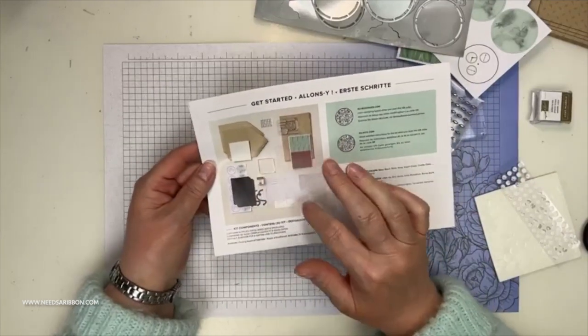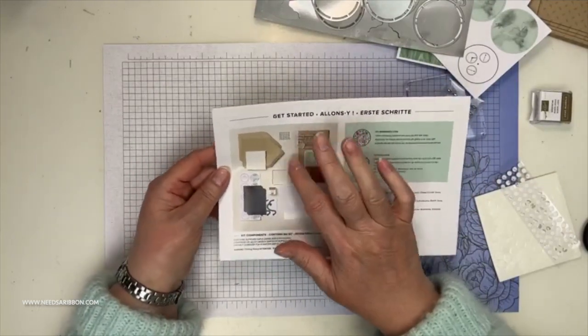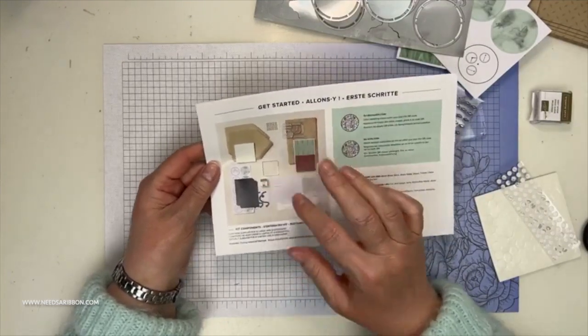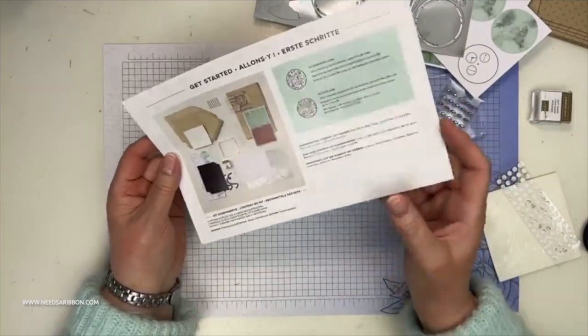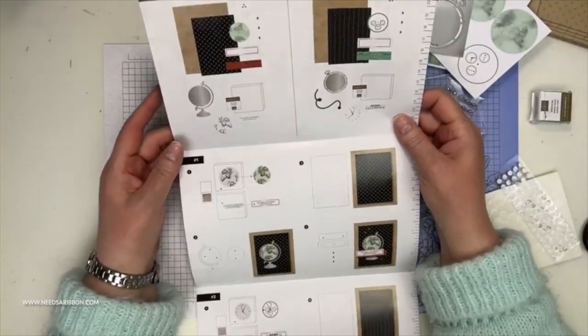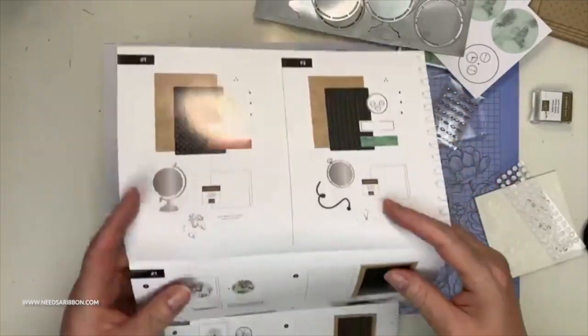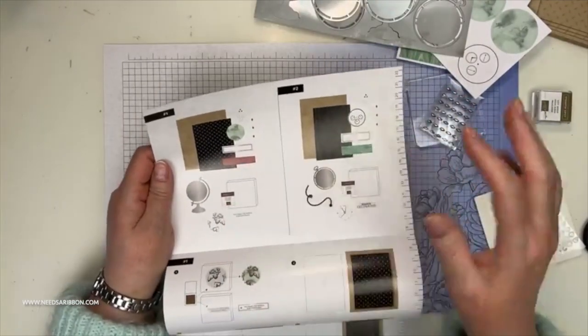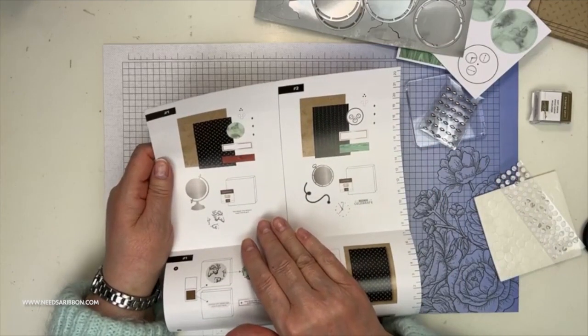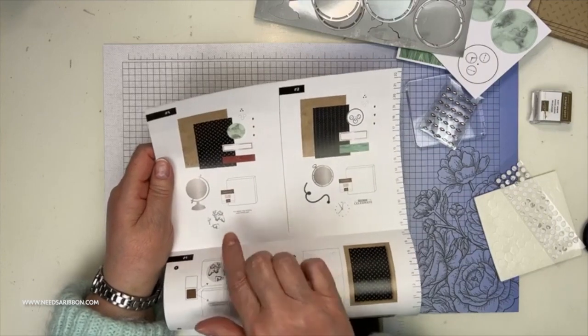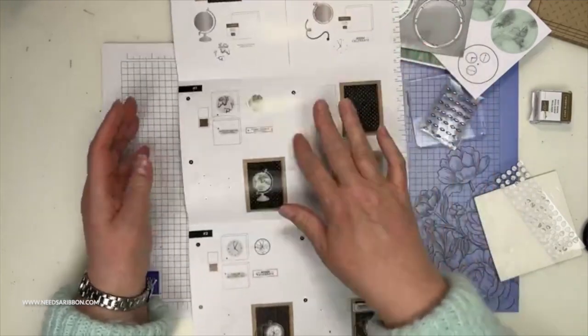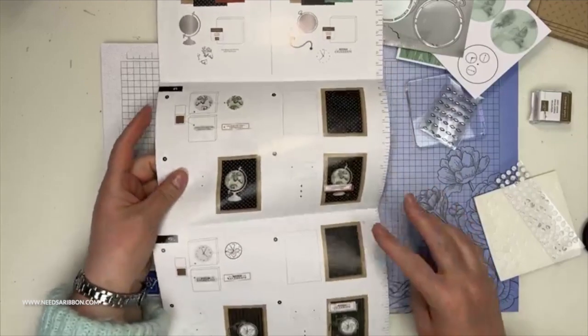So one thing I like to do right away is open up all my instructions. I like to flip to the back page because that basically lists our kit components. So we've got our adhesives, our greeting labels, various envelopes, the block, the stamp, the ink, et cetera. For eight. So let's take a look at the full instructions. Our first page of instructions, it shows how to break it down, how to separate. Four cards use this and four cards use this.